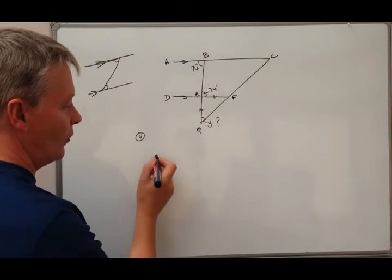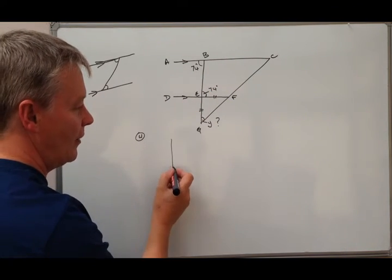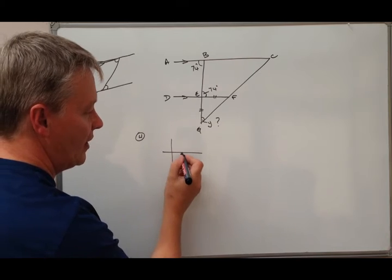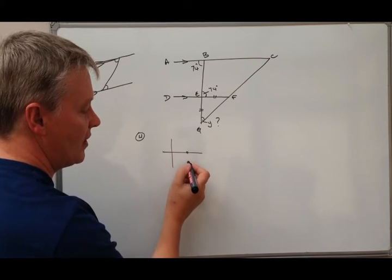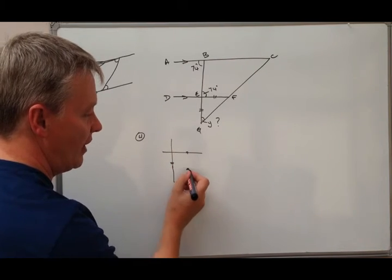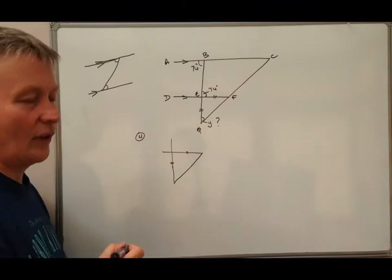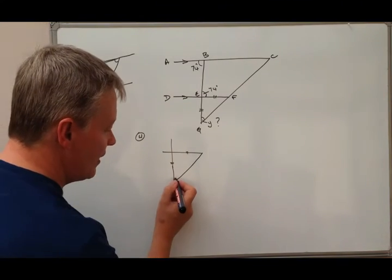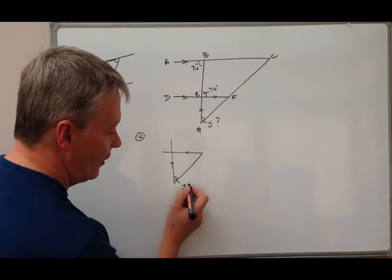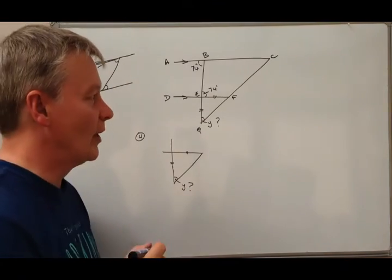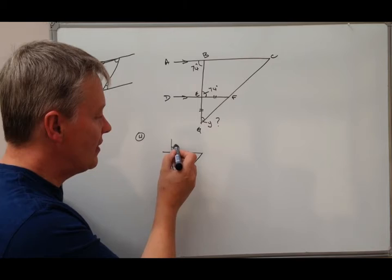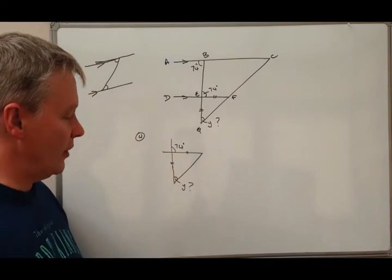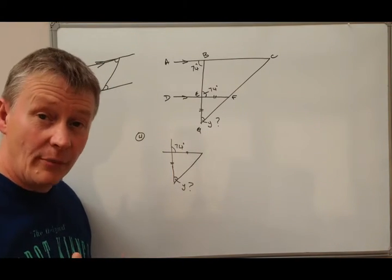What I'm after is this angle Y at the bottom, but what I have worked out now is that this bit here is 74 degrees. So what it'll allow me to do then is calculate this angle, and that's going to be very important to be able to work out the base angles of this isosceles triangle.